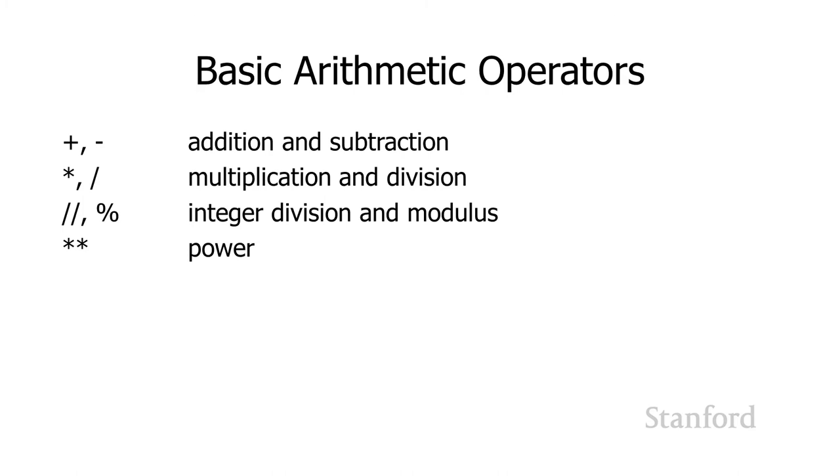Here are the basic arithmetic operations that you can perform in Python. You can add and subtract. You can multiply and divide. Those all look pretty normal, except for the use of the asterisk for multiplication, which I mentioned several times. The double slash and the percentage is used for integer division. The percentage gets modulus. I'll take a closer look at that in a minute. The double asterisk gives us power, which I'll also look at in just a minute.